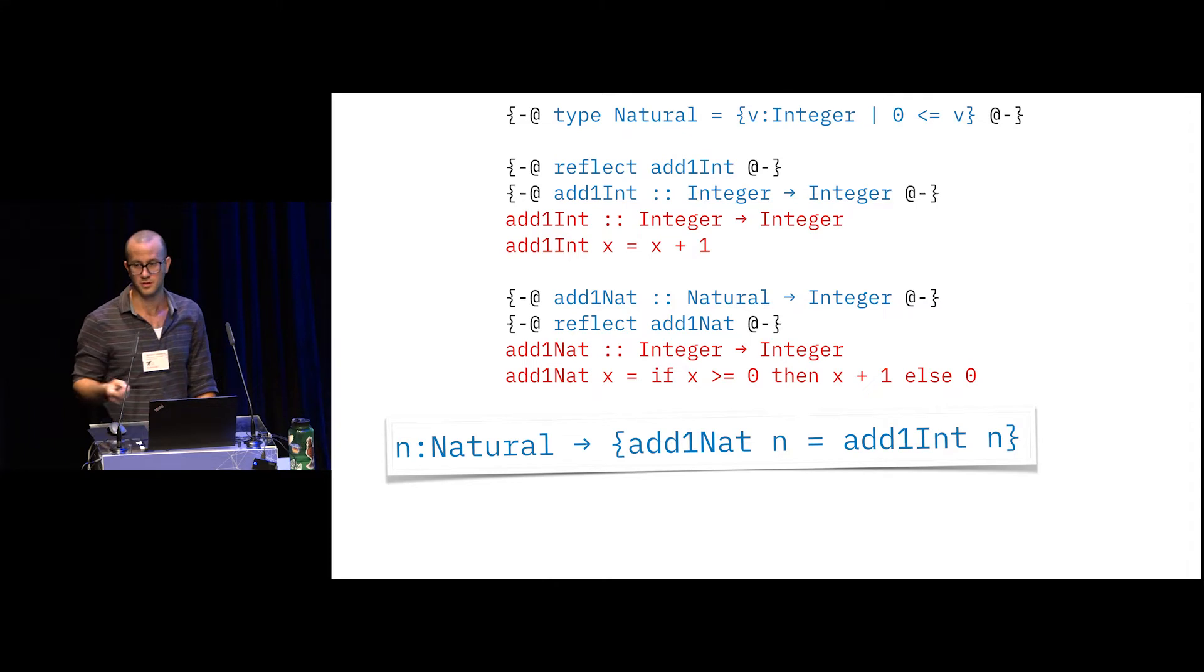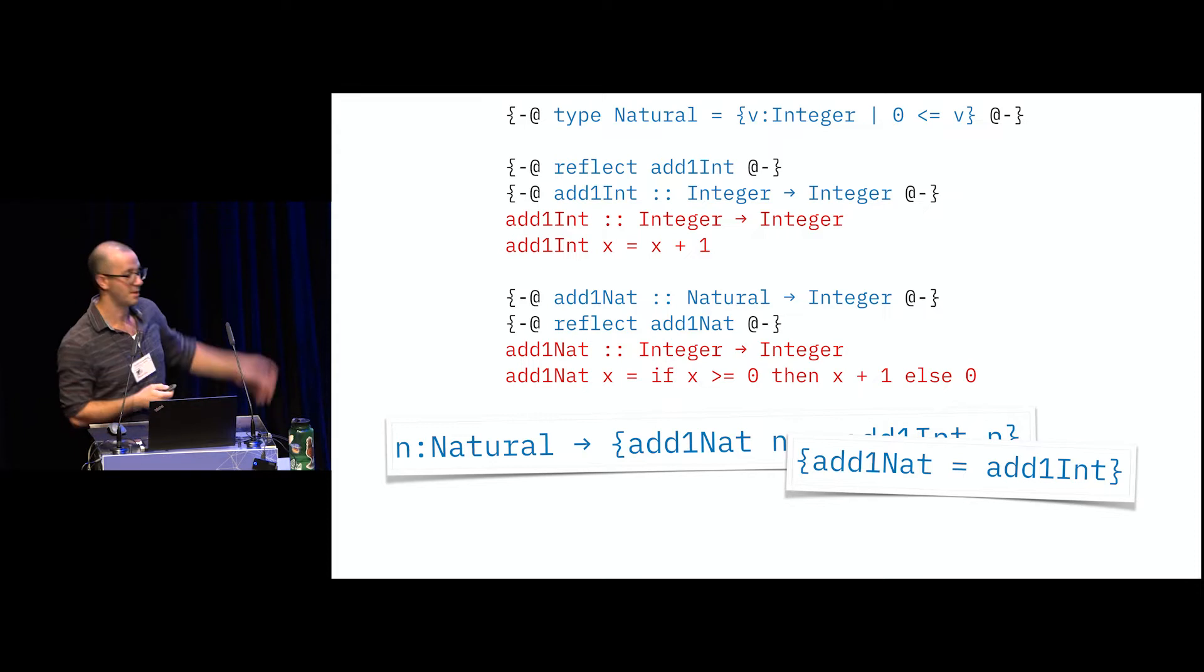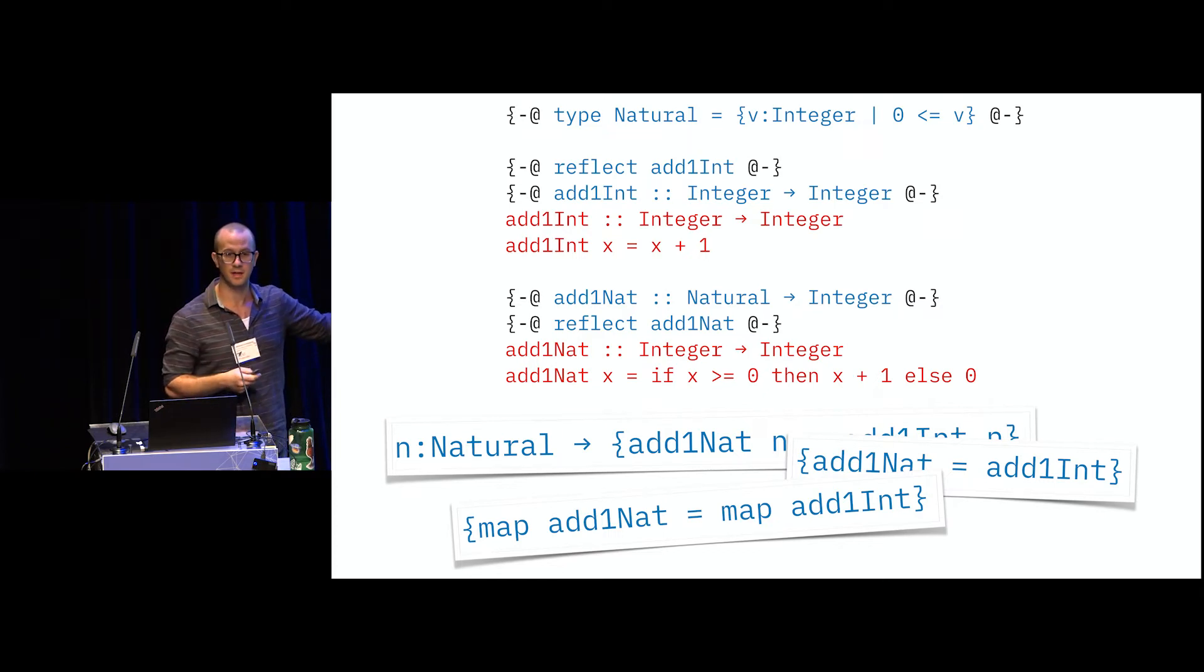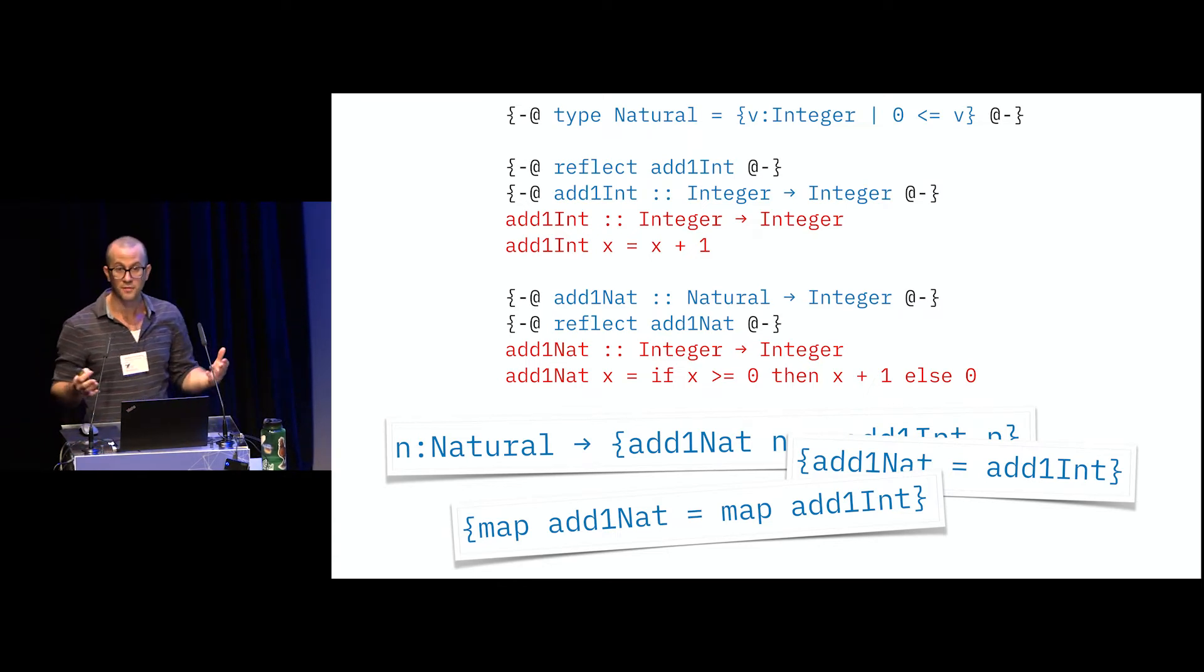So you can see here that the domain type, add one nat wants a natural. So you can sub in for these like a specification and an implementation that has weird corner cases. Think about that. I just want to keep it very legible here. So it's not hard at all in Liquid Haskell to prove this lemma. For all naturals, add one nat of n is equal to add one int of n. This is very straightforward. Now, what I want to do in this talk is prove something slightly stronger. I want to prove that these are the same function.